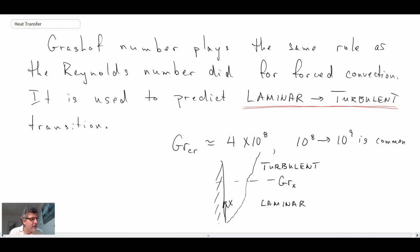So that is the Grashoff number, a non-dimensional number, very important for free or natural convection. And we'll be using that quite often as we go through the analysis in this chapter.